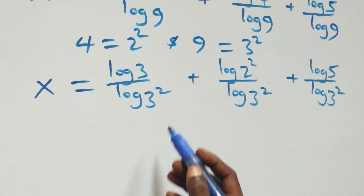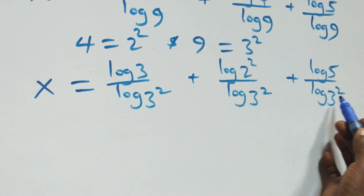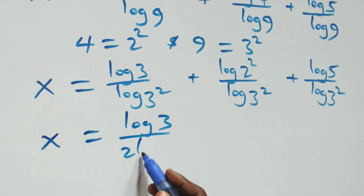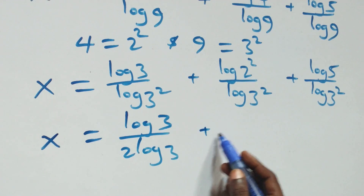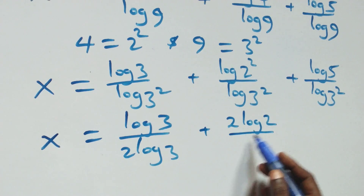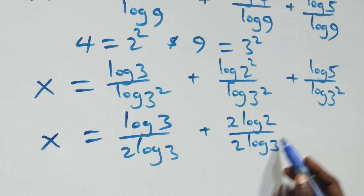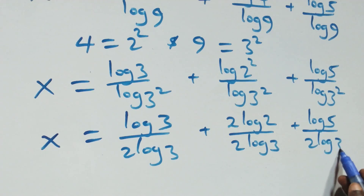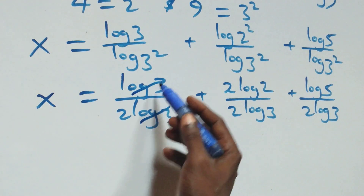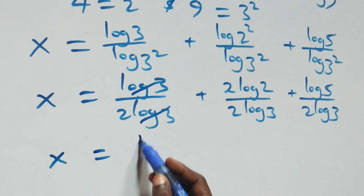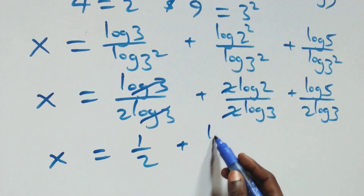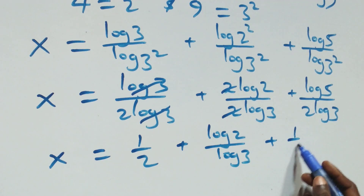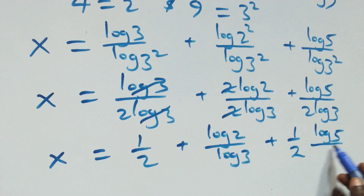We apply the power of logarithm: the exponent 2 comes down. So x equals log 3 over 2 log 3, plus 2 log 2 over 2 log 3, plus log 5 over 2 log 3. Log 3 cancels in the first term giving 1 over 2. The 2s cancel in the second term giving log 2 over log 3. And the last term becomes one half times log 5 over log 3.